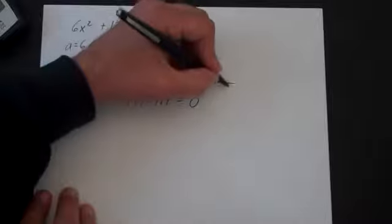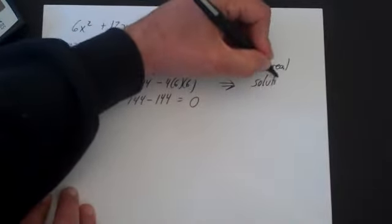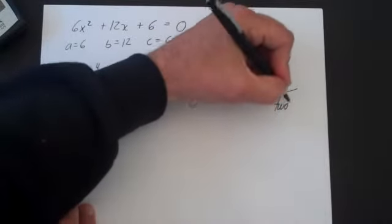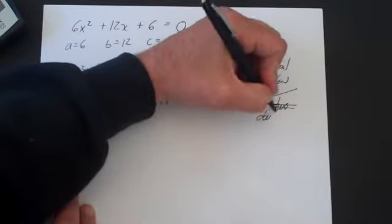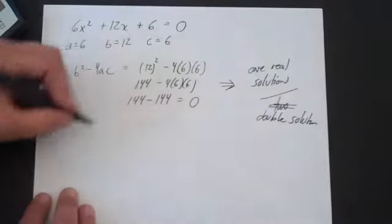So the way we'd say that before is we'd say it's one real solution. That's the way we'd say it in Algebra 1 and much of Algebra 2. But actually, the real way we'd say this is we could say there's two real solutions, or so it's not confusing, we could say there's a double solution.